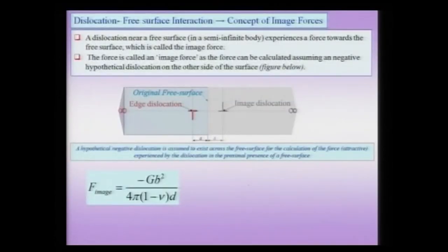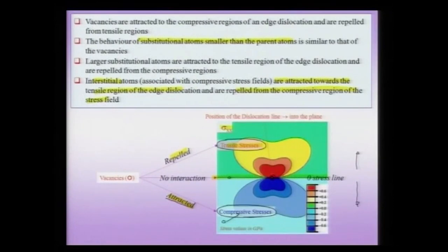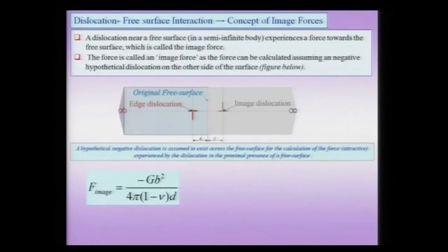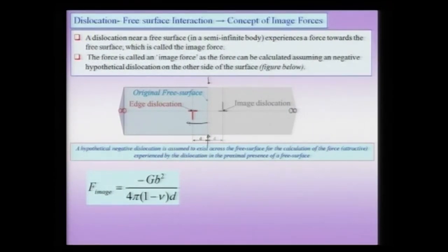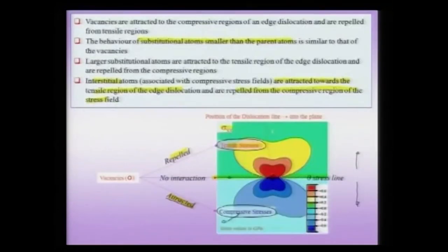Next, we consider the dislocation-free surface interaction. So far we have considered the dislocation stress field in an infinite body. Now suppose I have a dislocation sitting in a finite medium with a free surface. A dislocation near a free surface is actually attracted towards the free surface, because the left-right symmetry of the dislocation stress field is broken down in the presence of the free surface — it no longer has the same symmetry as in an infinite medium.